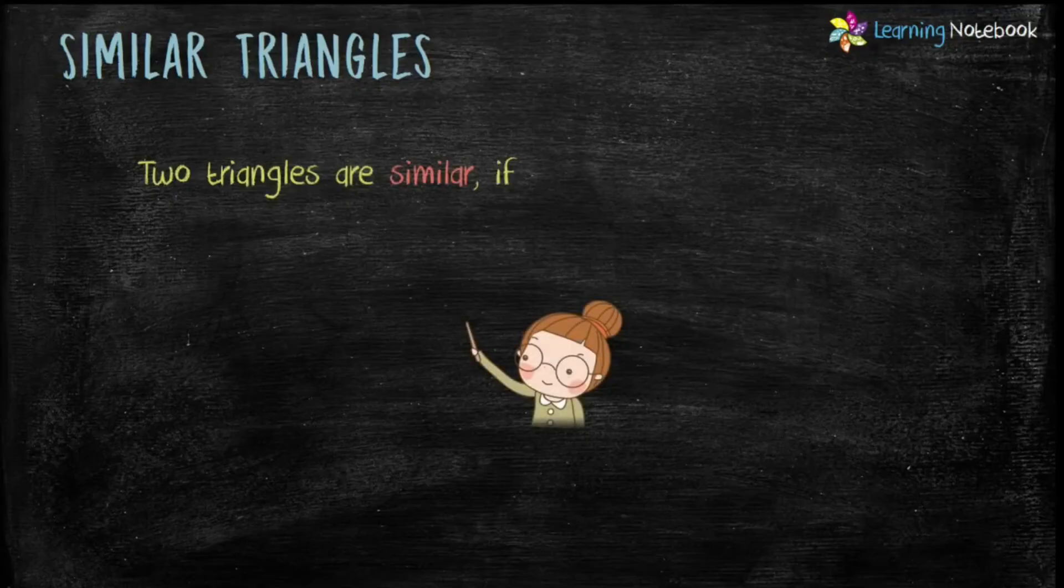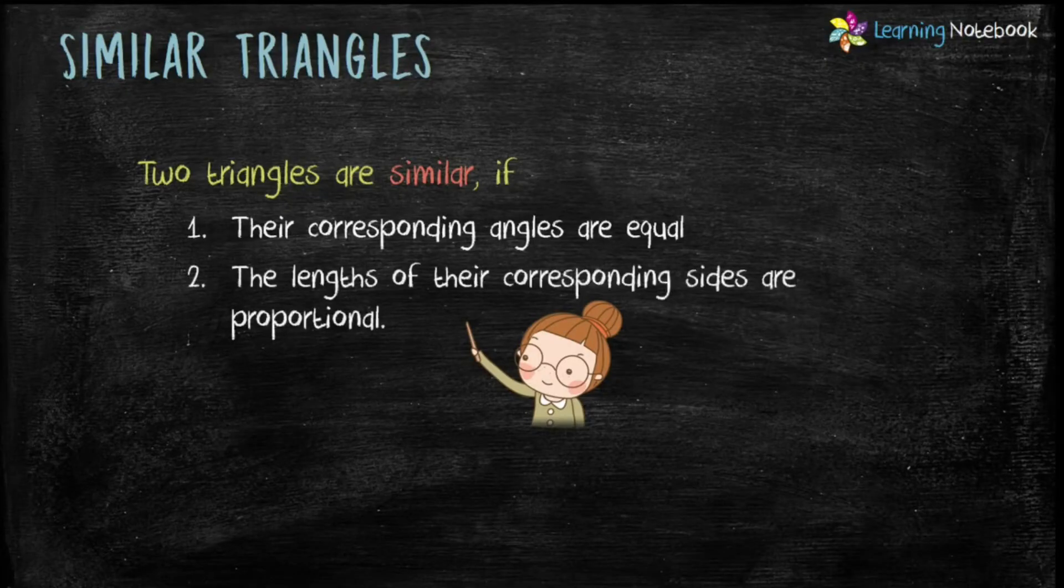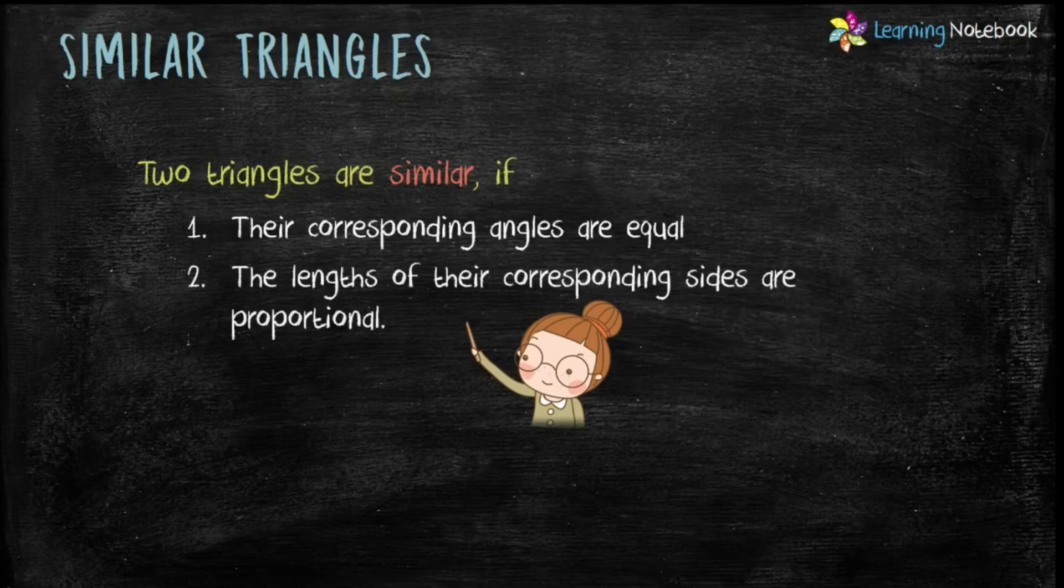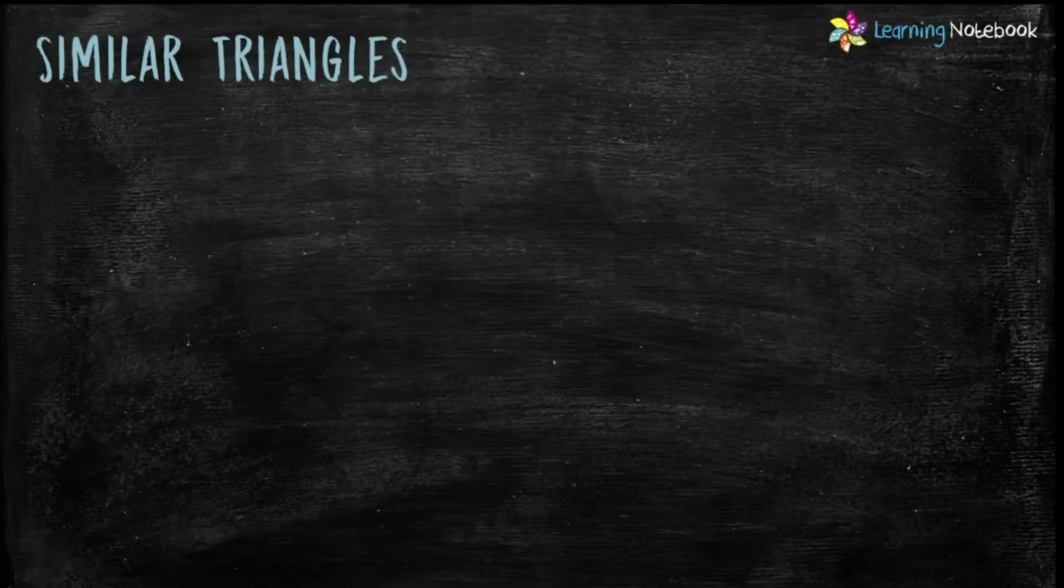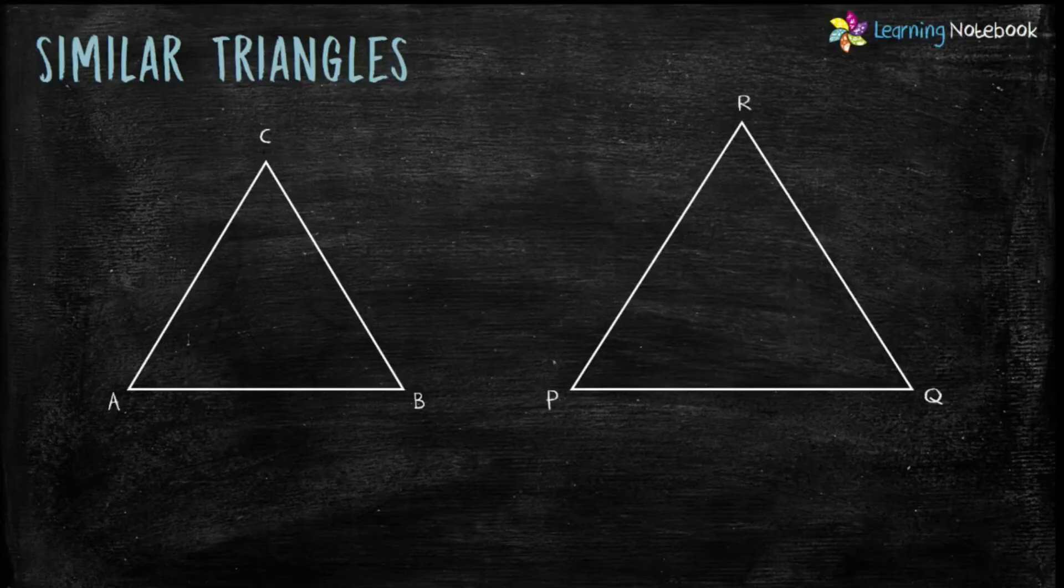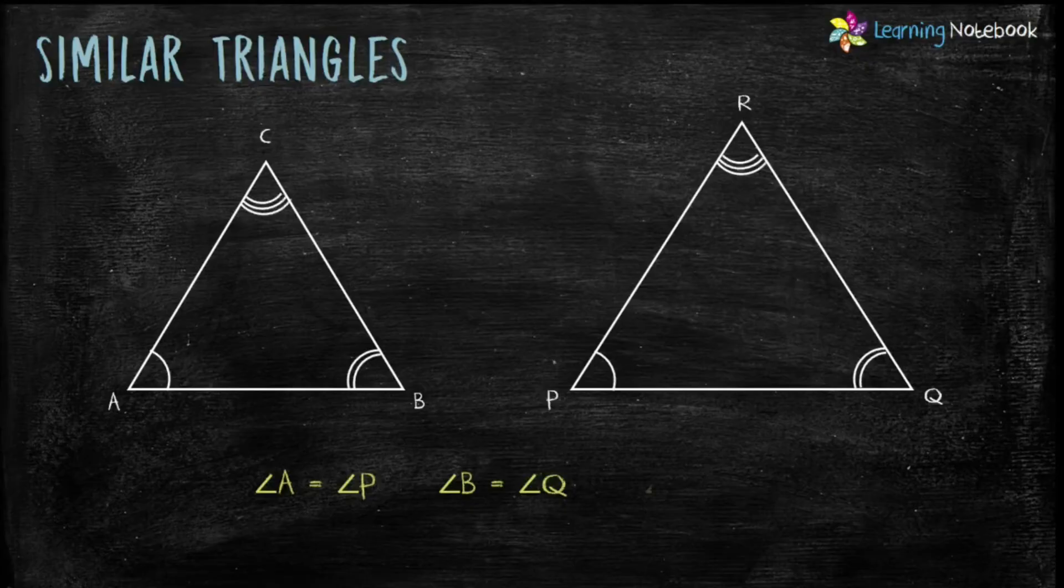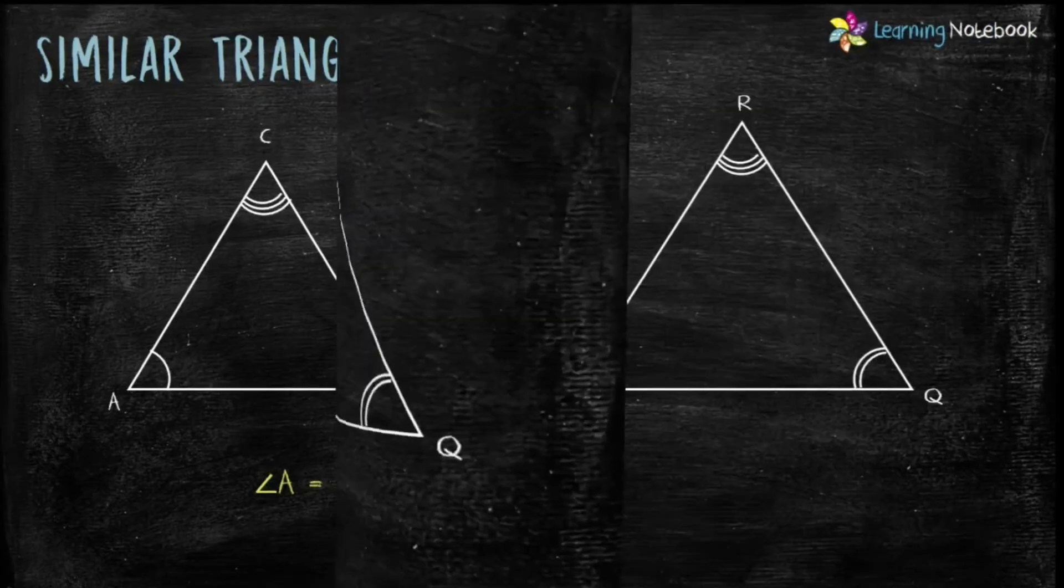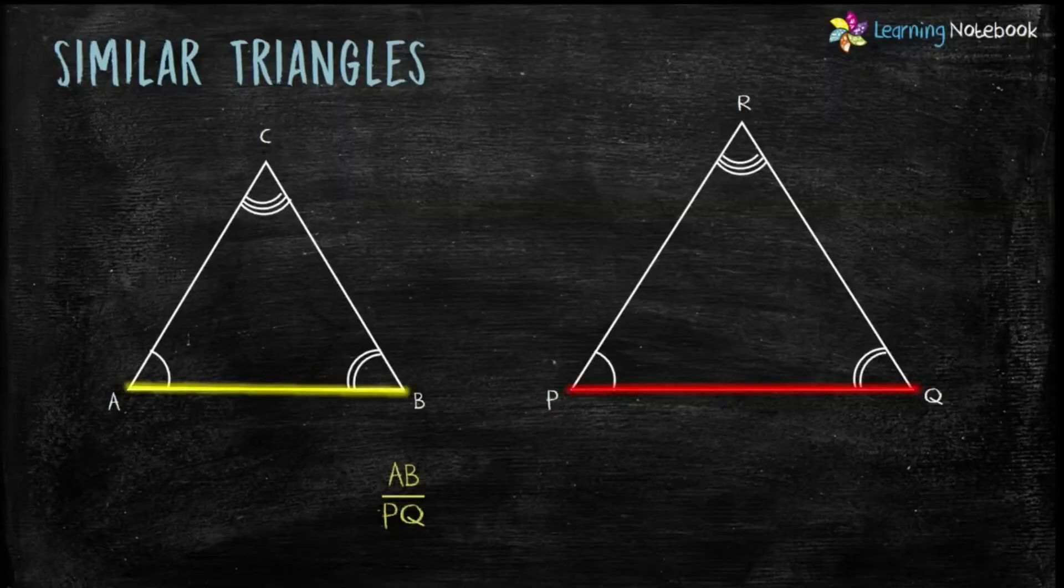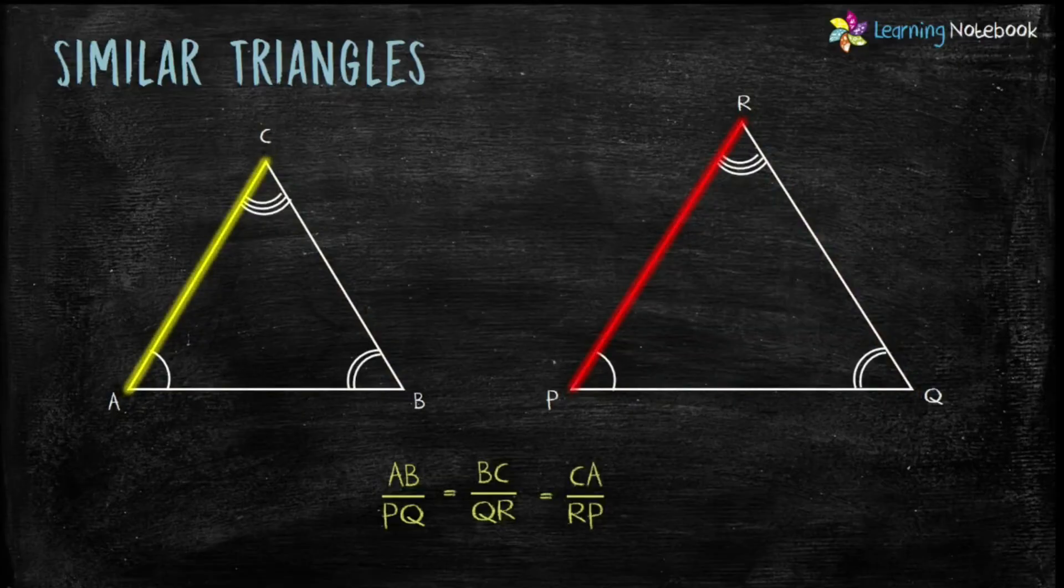Now, what are similar triangles? Two triangles are similar if their corresponding angles are equal, and second, if the lengths of their corresponding sides are proportional. Corresponding angles are equal means in two similar triangles ABC and PQR, angle A equals angle P, angle B equals angle Q, and angle C equals angle R. And AB upon PQ equals BC upon QR equals CA upon RP.